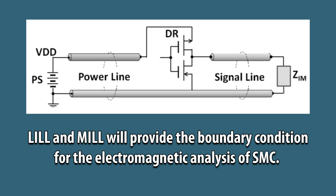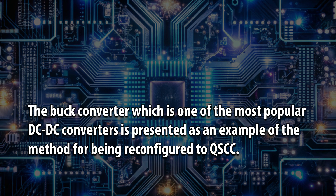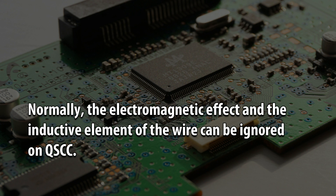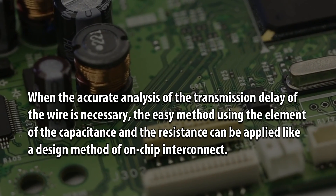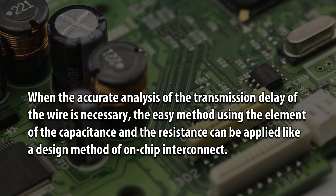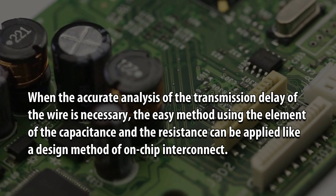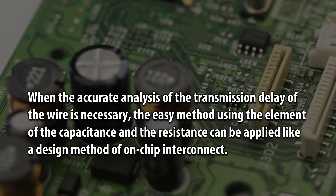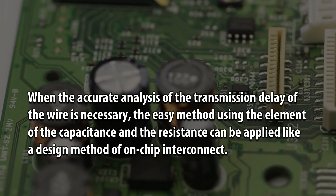LILL and MILL will provide the boundary condition for the electromagnetic analysis of SMPC. The buck converter, one of the most popular DC-to-DC converters, is presented as an example of the method for being reconfigured to QSCC. Normally, the electromagnetic effect and the inductive element of the wire can be ignored on QSCC. When accurate analysis of transmission delay is necessary, the easy method using capacitance and resistance elements can be applied, like a design method of on-chip interconnect.